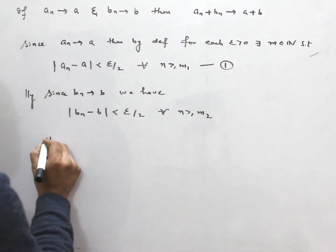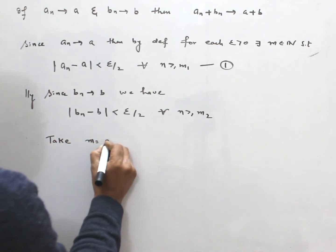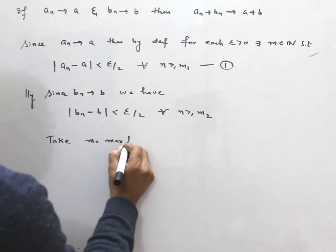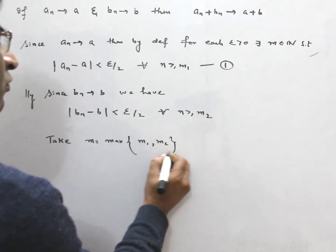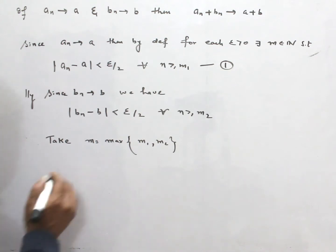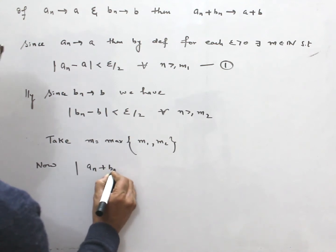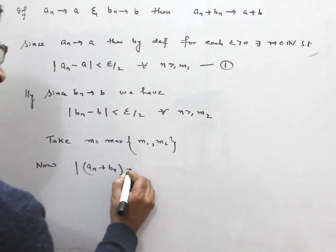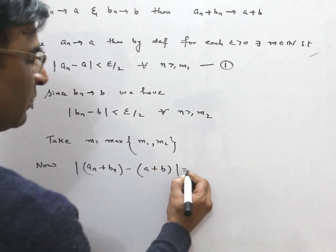Now, take M is maximum of M1 and M2, whichever the bigger number, we take M is that.